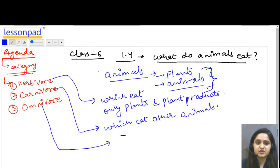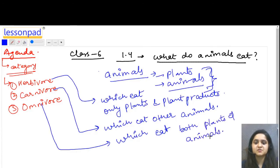And what is omnivore? Which eat both plants and animals. So these are three categories.